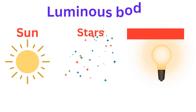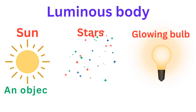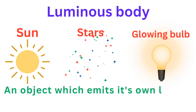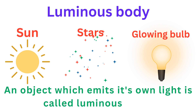Luminous body. An object which emits its own light is called a luminous body. Sun, stars, and glowing bulbs are luminous bodies.